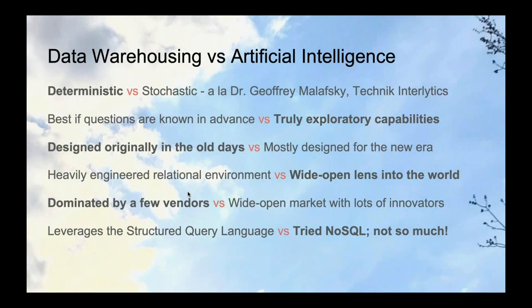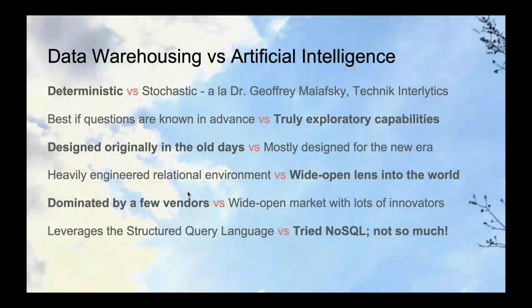With data warehousing, you kind of have to know the questions your analysts are going to ask in advance — that's why you do data modeling for your warehouse. But AI is much more exploratory. In the Hadoop movement, there was an interesting concept called schema-on-read: you just persist the data as it is and apply the schema as you pull data out of the system, so you don't have to worry as much about how you model the data.